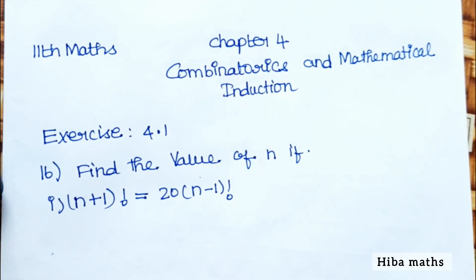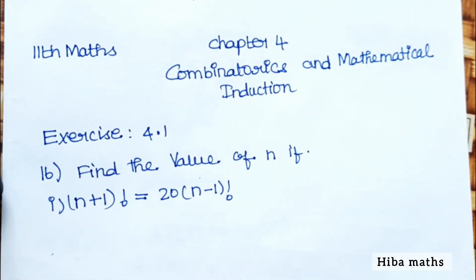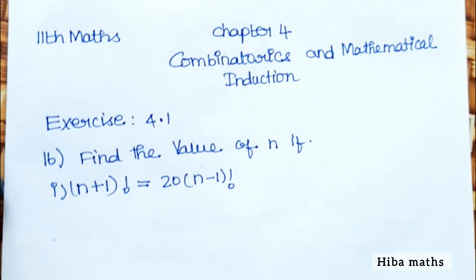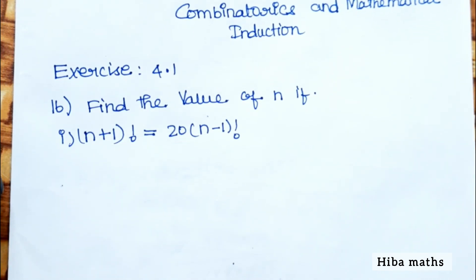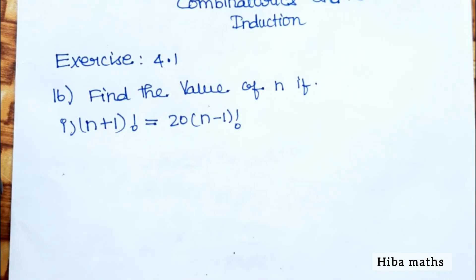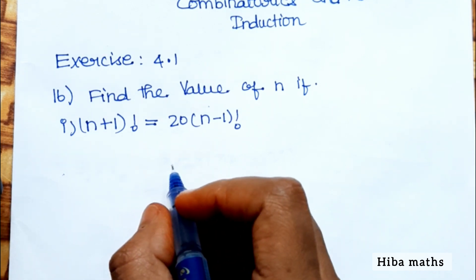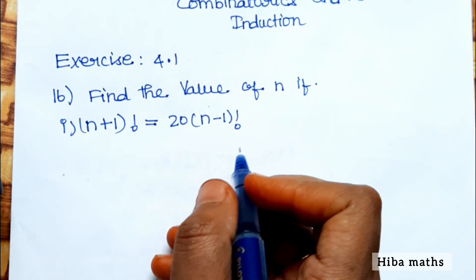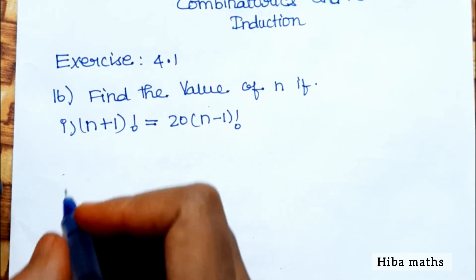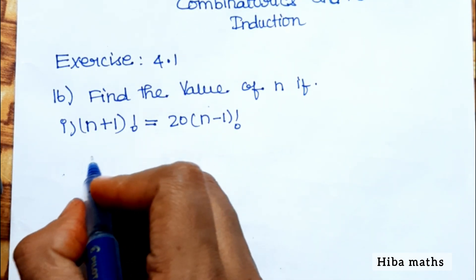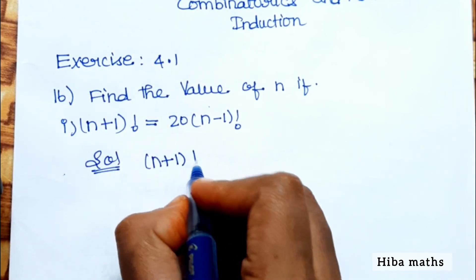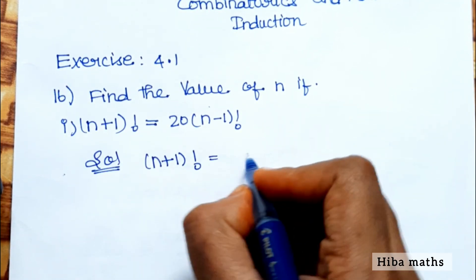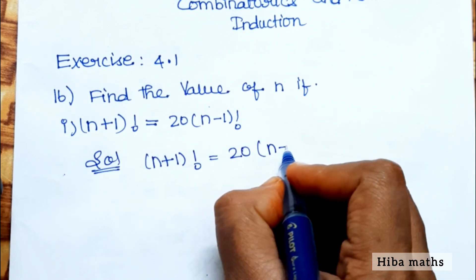Hello students, welcome to Hiba Max 11 Standard, Chapter 4, Exercise 4.1, 16th question. We need to find the value of n if (n+1)! is equal to 20 into (n-1)!. Let's solve this step by step.